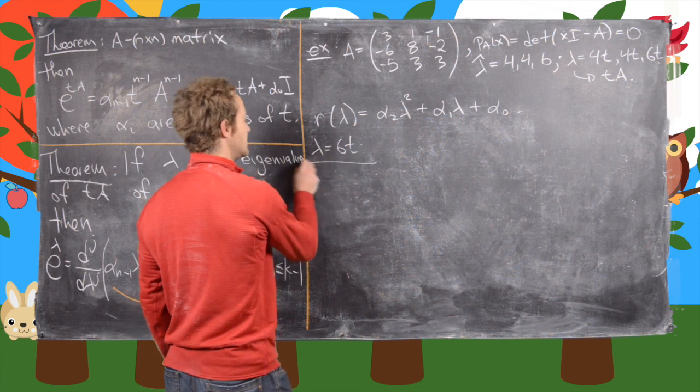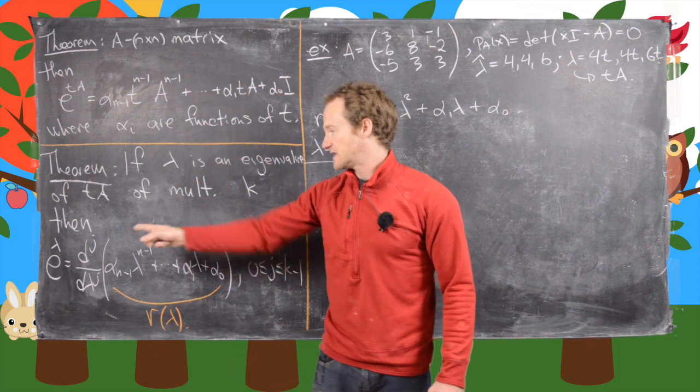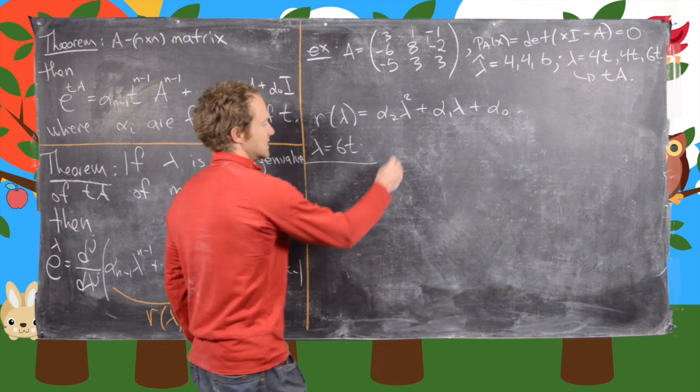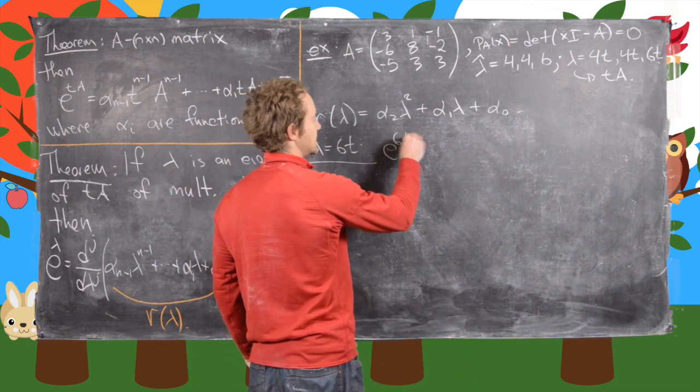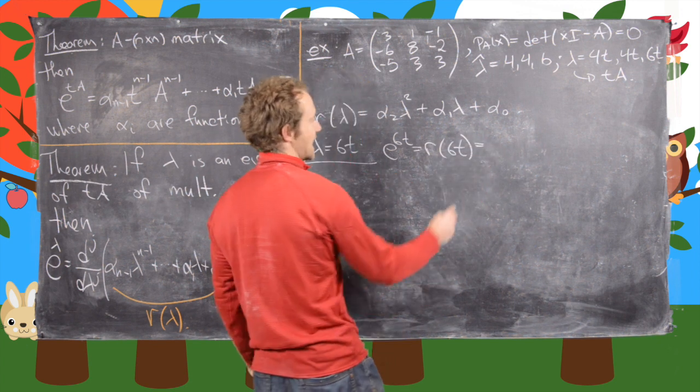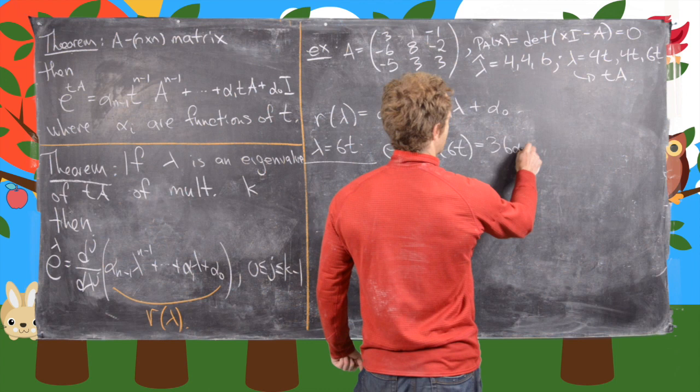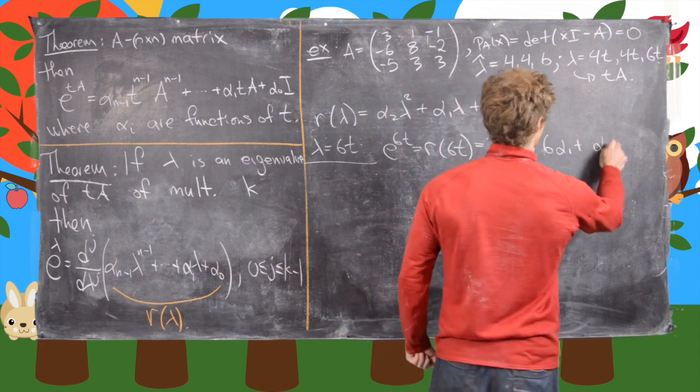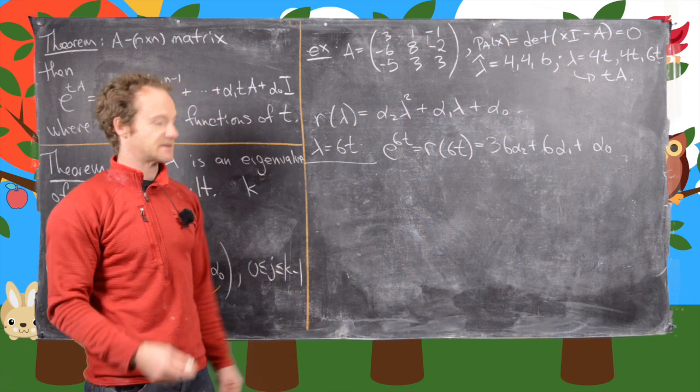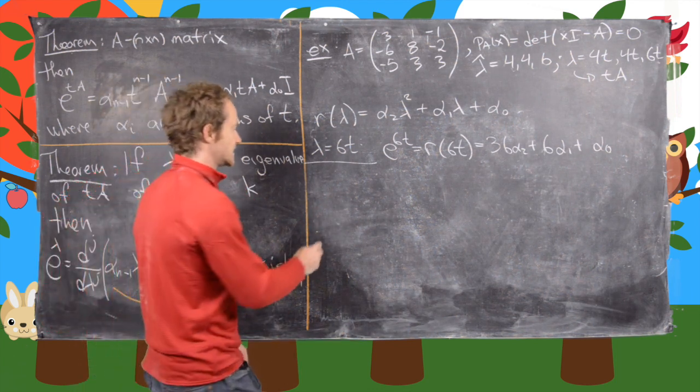So if we have lambda equals 6t, that means we have e to the 6t is r(6t). So e to the 6t is equal to r(6t), but now notice that is 36*alpha_2 + 6*alpha_1 + alpha_0. And that's the only equation we get from this because this is multiplicity 1.